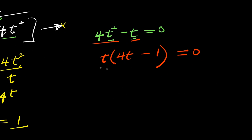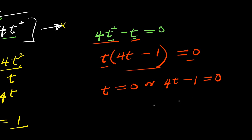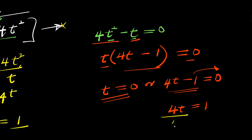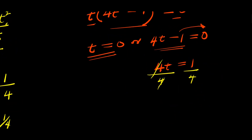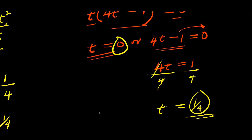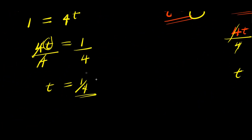I can equate each factor to 0: I have t equals 0, or 4t minus 1 equals 0. For the second factor, I move negative 1 over, it becomes positive 1 — I have 4t equals 1. Solving for t, I divide by 4, giving t equals 1 over 4. So I have two different solutions: 0 and 1 over 4. Using the first method, I had only one solution, which is 1 over 4.